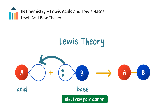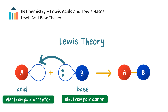In Lewis acid-base theory, the species which possesses a pair of electrons and donates it is called a Lewis base. We often say the base donates or transfers its pair of electrons, but what we really mean is it shares them with another species to form a new bond. The species which accepts — or rather shares — the pair of electrons with the base is called a Lewis acid.